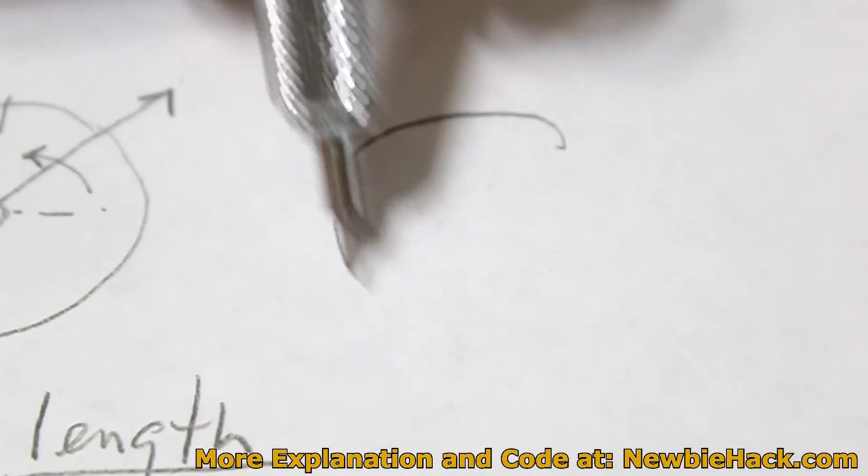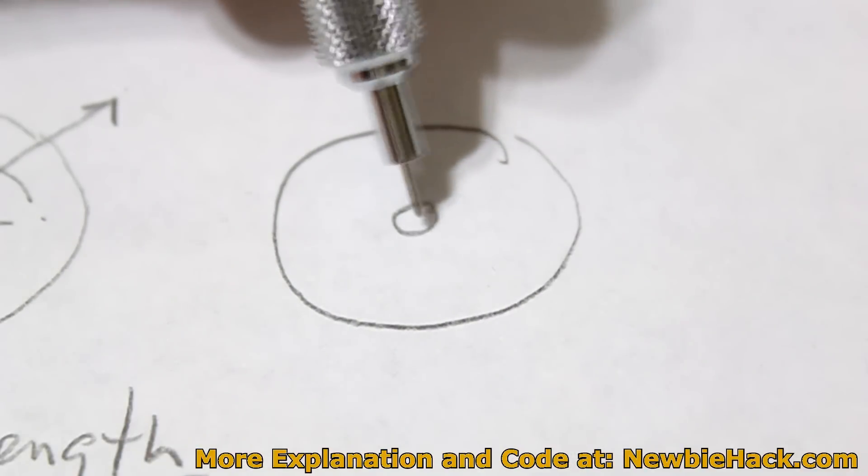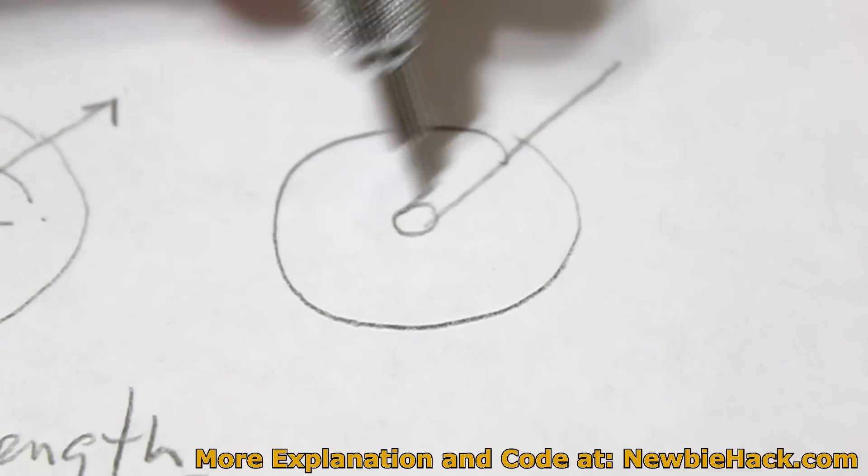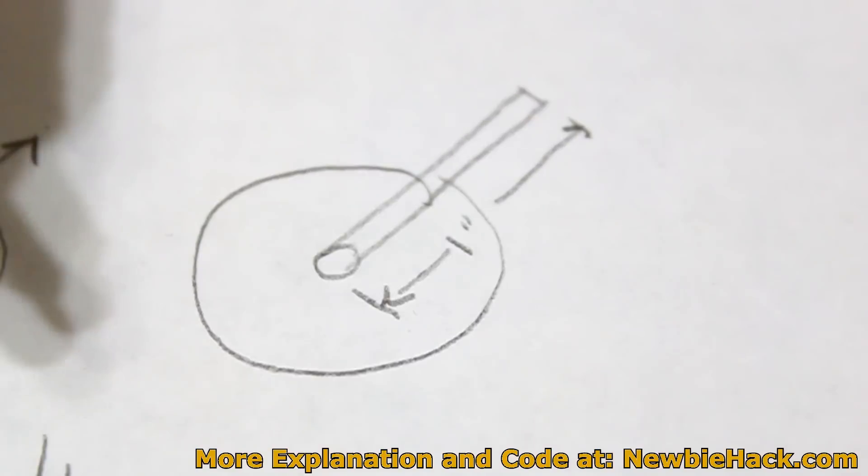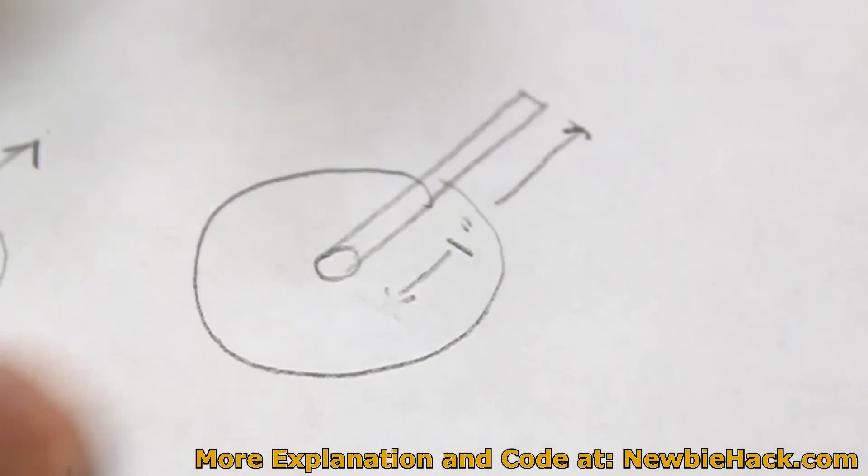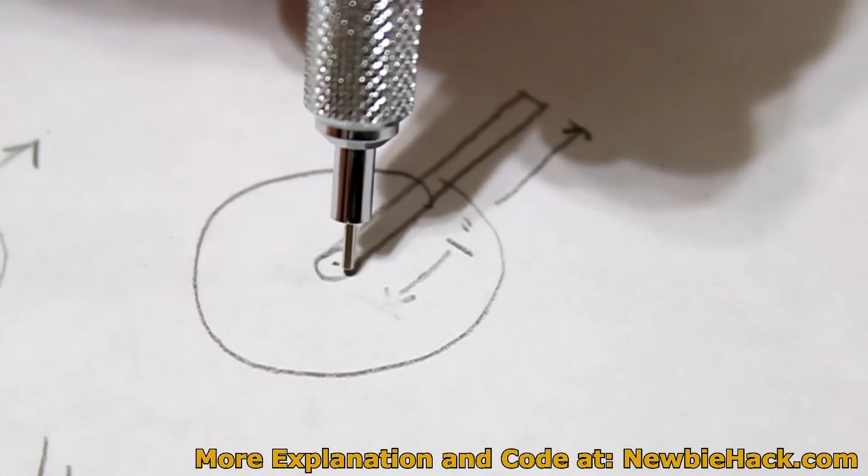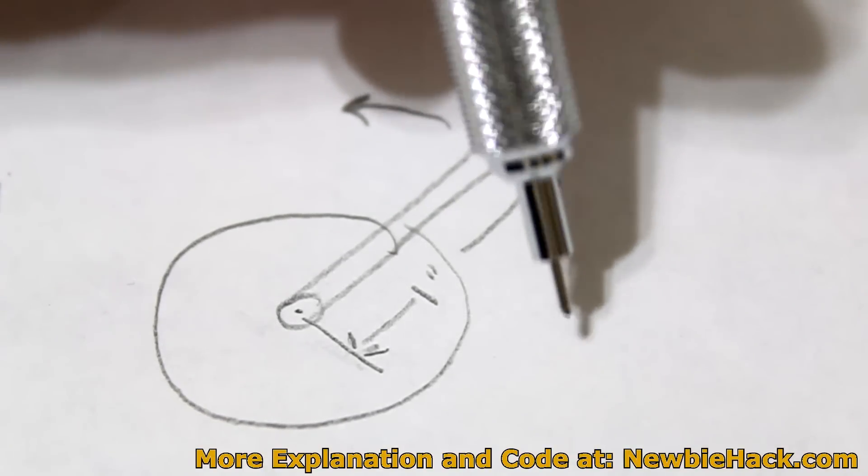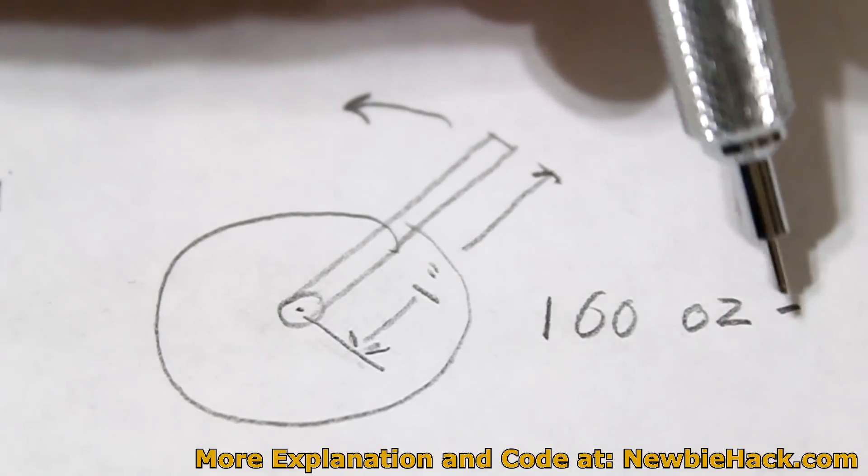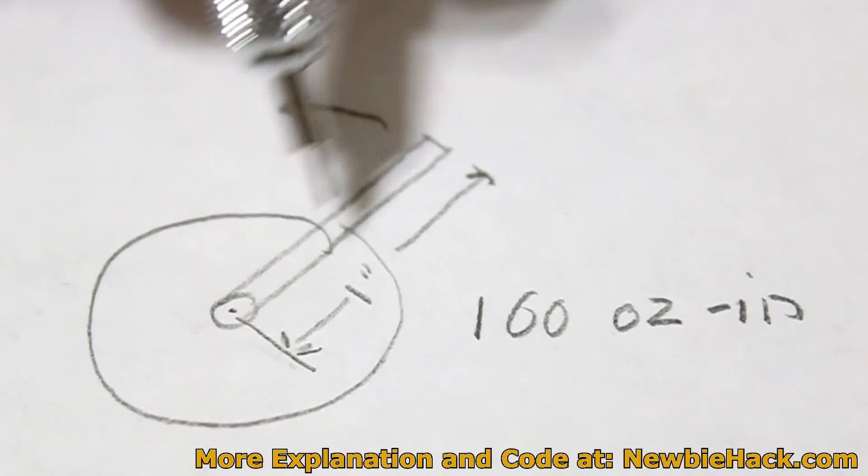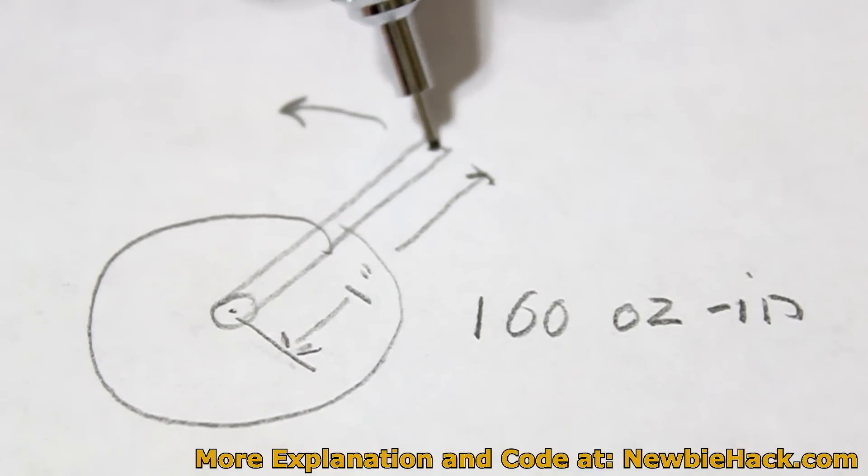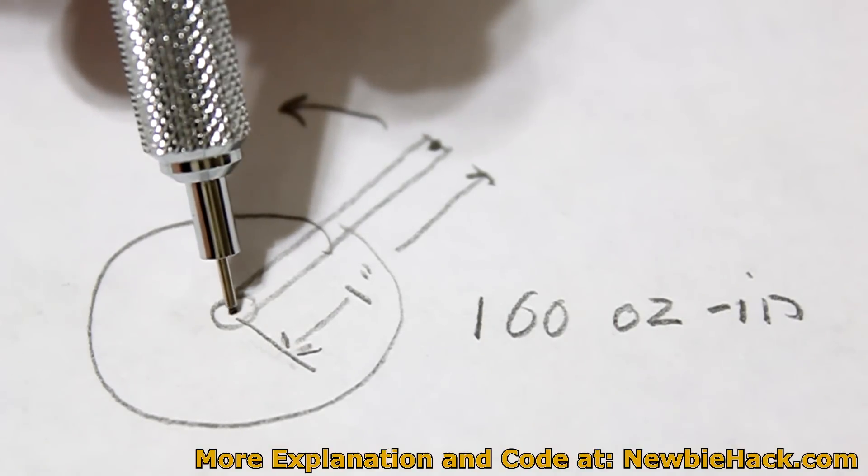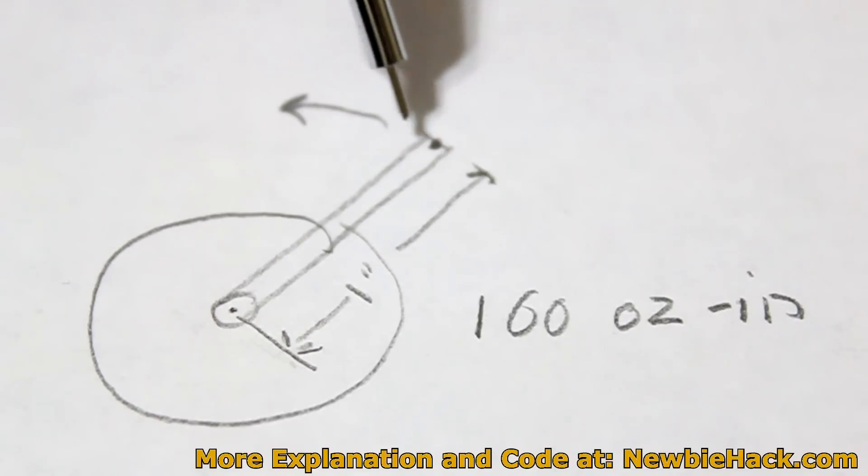For example, let's say we have the motor again, and we have a shaft, and we have an arm that is connected to that shaft coming outwards. And this shaft is, let's say, one inch in length. Actually this would be measured from the center of the shaft. So if it was the center of the shaft, it would be measured from here. And let's say that the motor wanted to turn in this direction. And let's also say that this motor is rated, let's say, 100 ounce inch of torque.